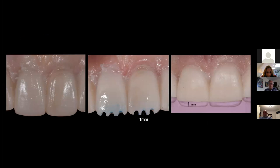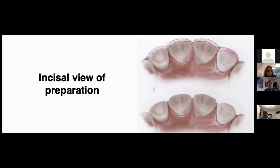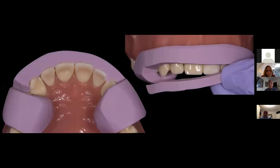You want adequate incisal reduction — usually about 1 mm, though it might be more. With the guide, you can see that adequate reduction was done. This would be the ideal preparation; however, not every tooth is ideal — they might be rotated, chipped, or broken. Ideally the preparation wraps around, and I usually don't break the contact, though there are reasons why you would.